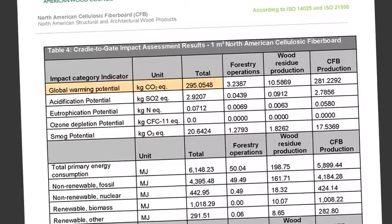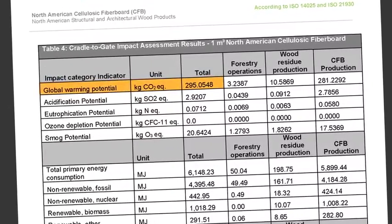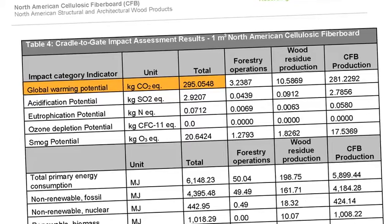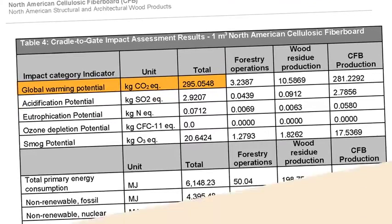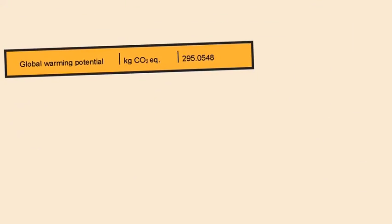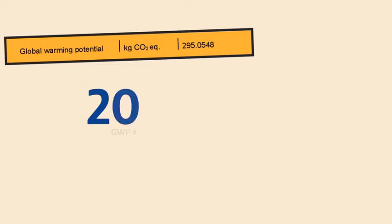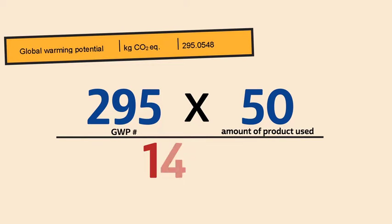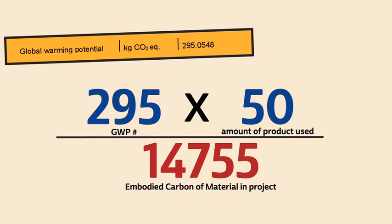In an EPD, the embodied carbon is expressed as the global warming potential, or GWP factor, for a given amount of a specific material. You can multiply the amount of material you are using by its GWP factor and figure out what the carbon emissions for each material in your building will be.